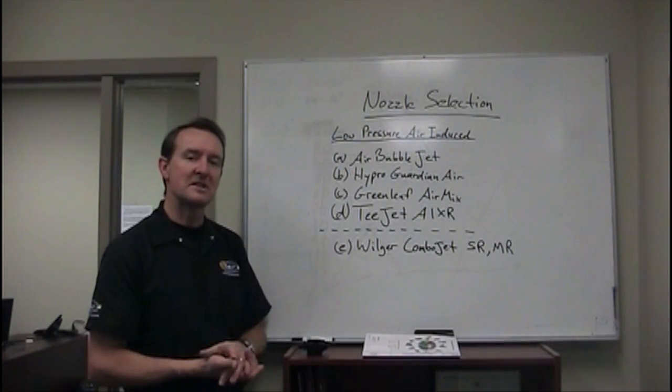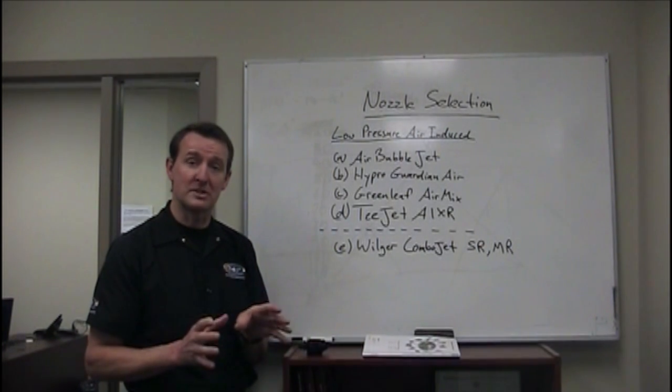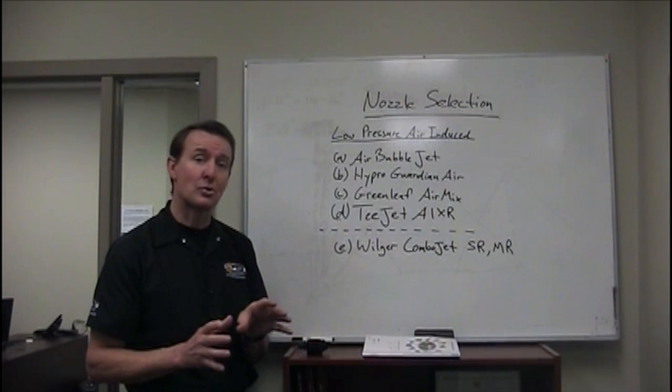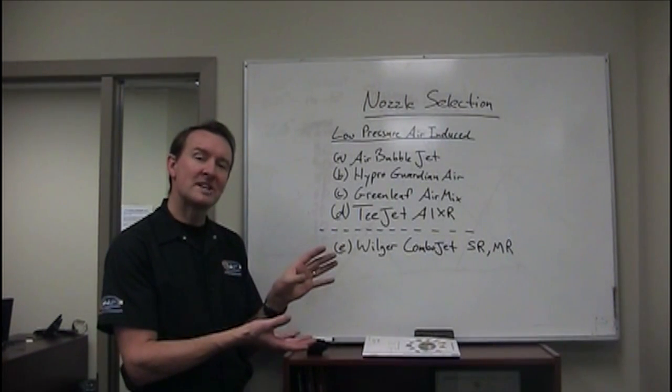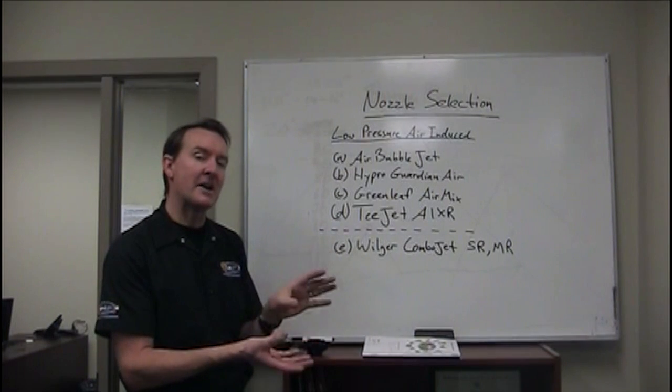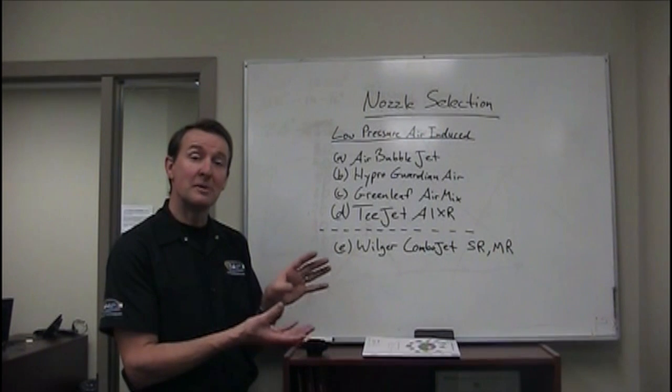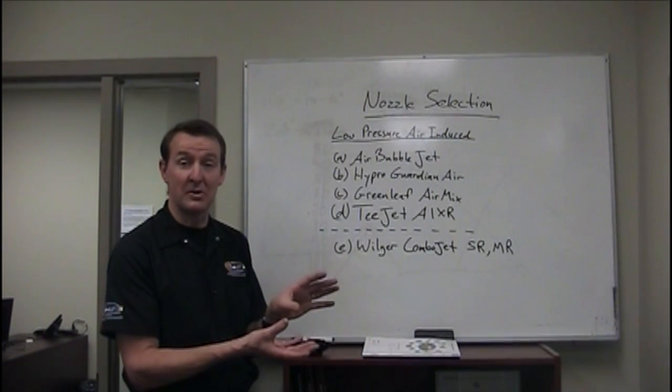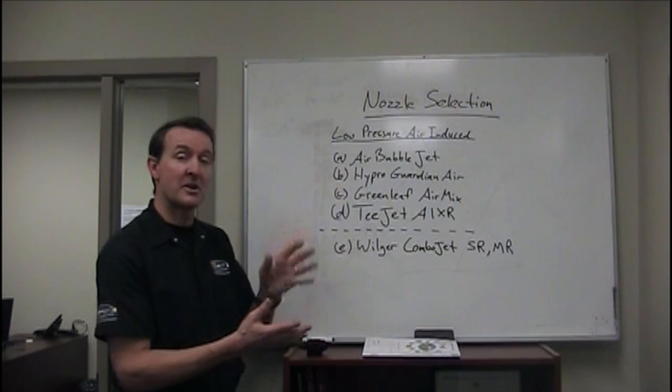The answer is, roughly speaking, yes. Your target droplet size for all these applications is about coarse, and all these nozzles produce a coarse spray at their various flow rate offerings. All nozzles tend to get a little coarser when you go to higher flow rates. So as you get to your fungicide and higher water volume situations, you might find the spray has become very coarse or even extremely coarse even though you've bought into a low-pressure air-induced nozzle.